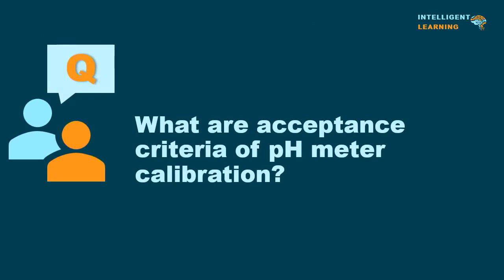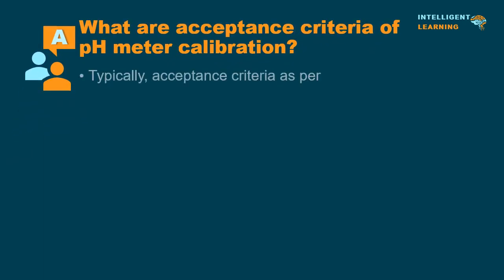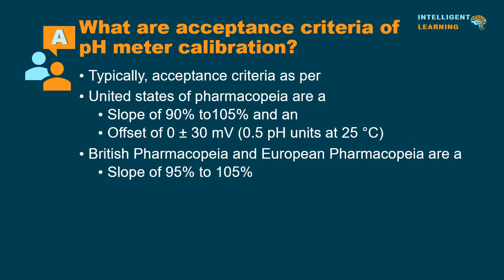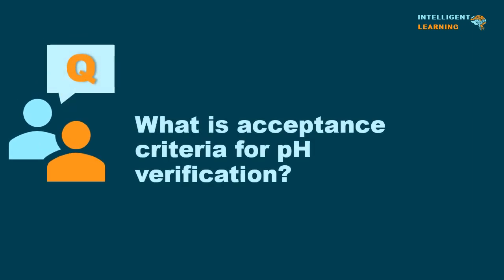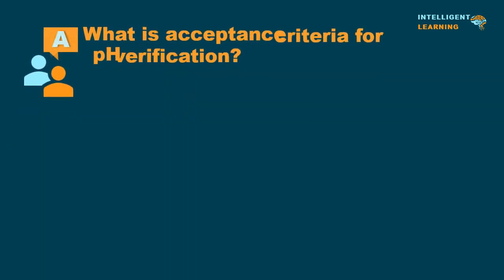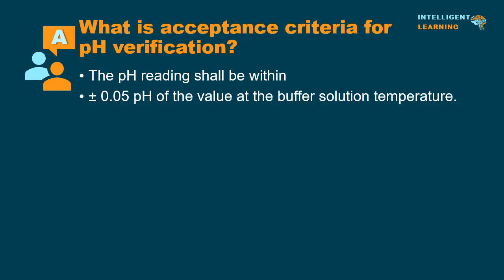What are the acceptance criteria of pH meter calibration? The pH reading shall be within ± 0.05 pH of the value at the buffer solution temperature.